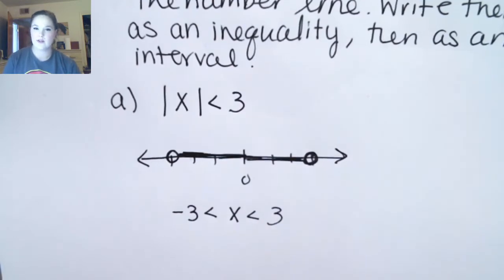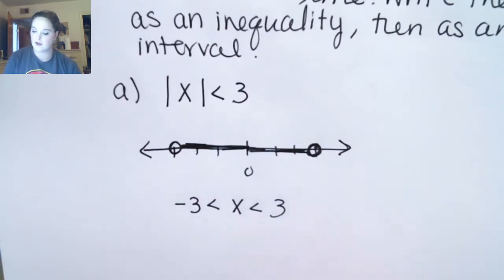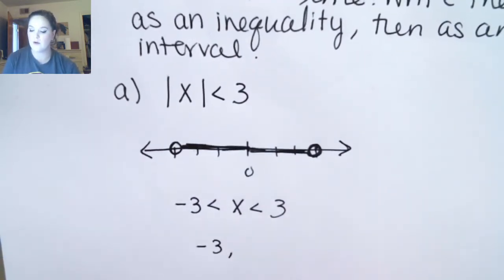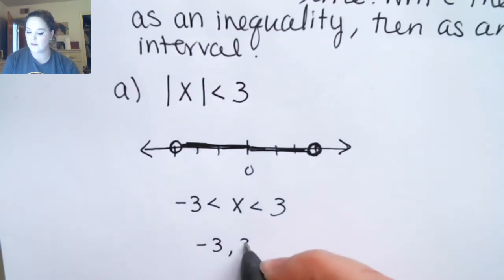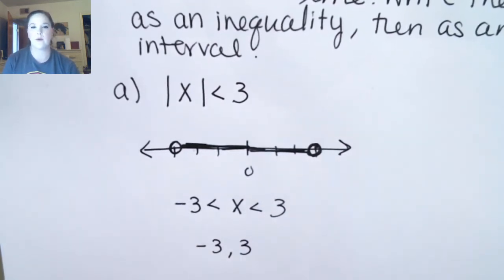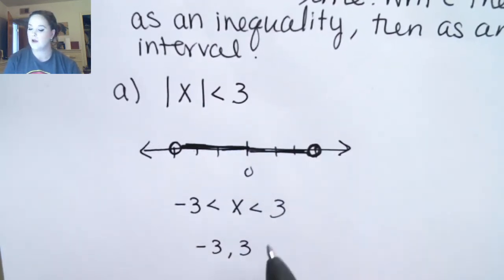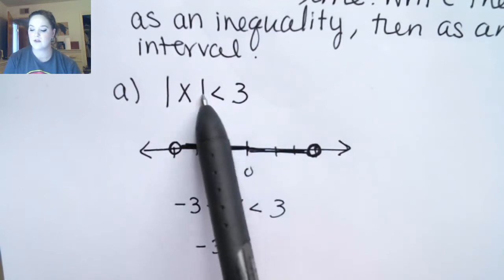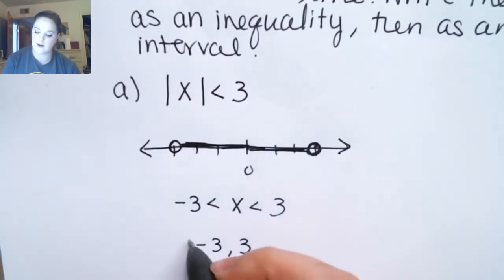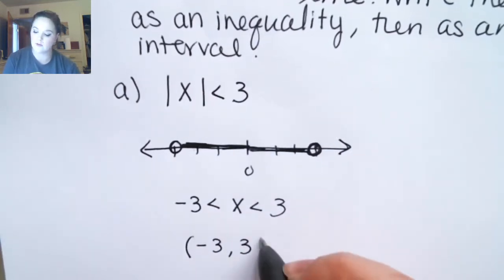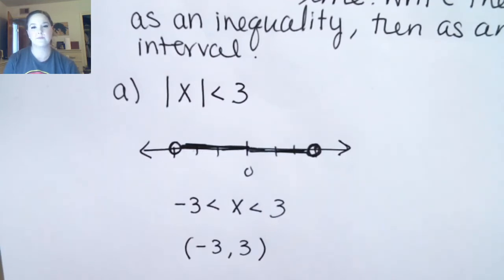Now we're going to write this as an interval. My left endpoint is negative three — you always want to put the smaller number on the left. My right endpoint is positive three. And because this is strictly less than and these points are not included, I'm going to use parentheses.